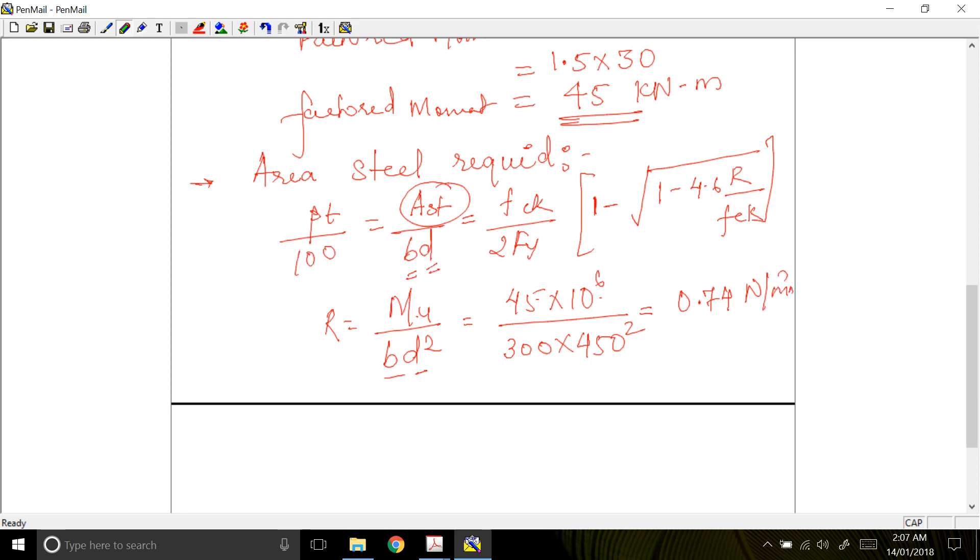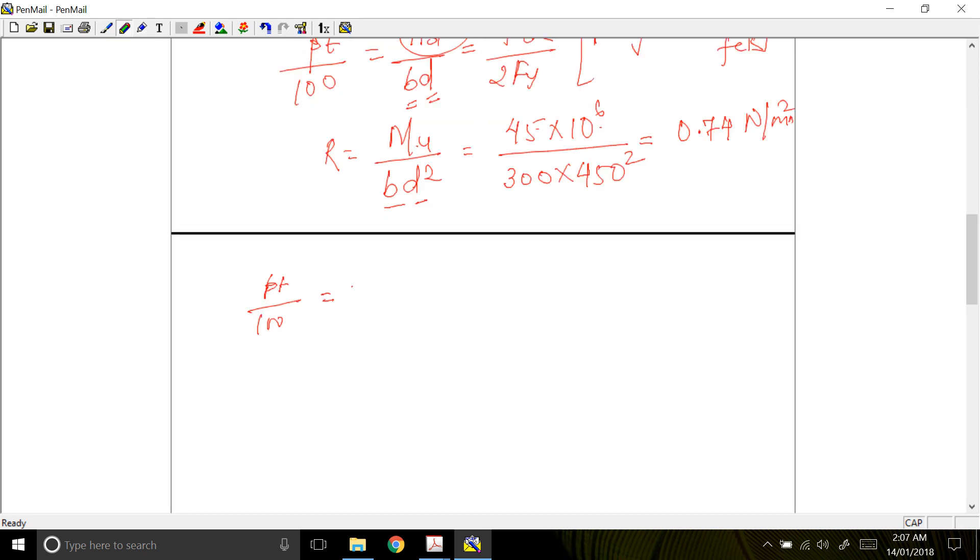Pt by 100 is equal to FCK upon 2Fy into 1 minus the root of 1 minus 4.6R upon FCK. Here FCK is 25 MPa, Fy is 500, so 2 into 500. Then we have 1 minus the root of 1 minus 4.6 times 0.74 divided by 25.